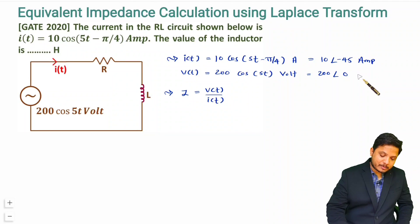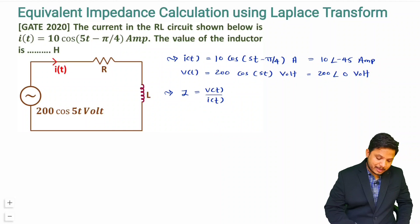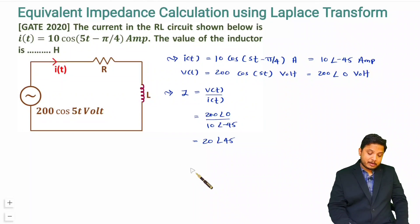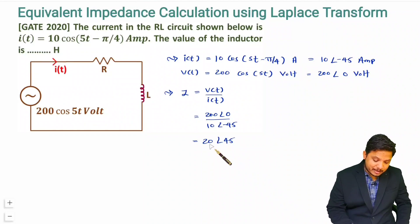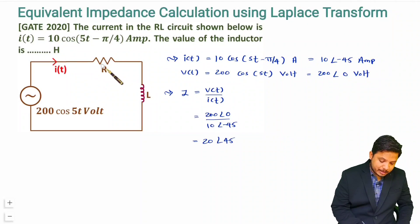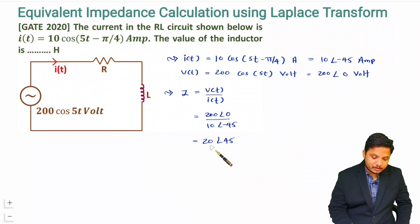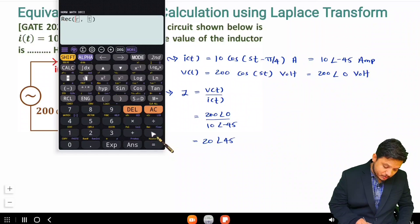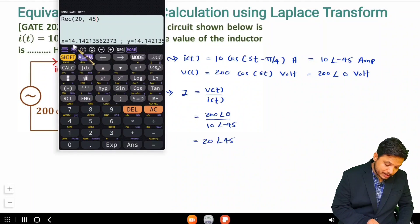In terms of amperes we have current, and in terms of voltage we have V. So now we can place this: V is 200∠0 and I is 10∠−45. So Z = 200/10 = 20, and 0 − (−45) = 45°, giving us 20∠45°. We just need to take the real and imaginary parts separately. Using the rectangular function in the calculator, 20∠45 gives real part 14.14 and imaginary part 14.14.